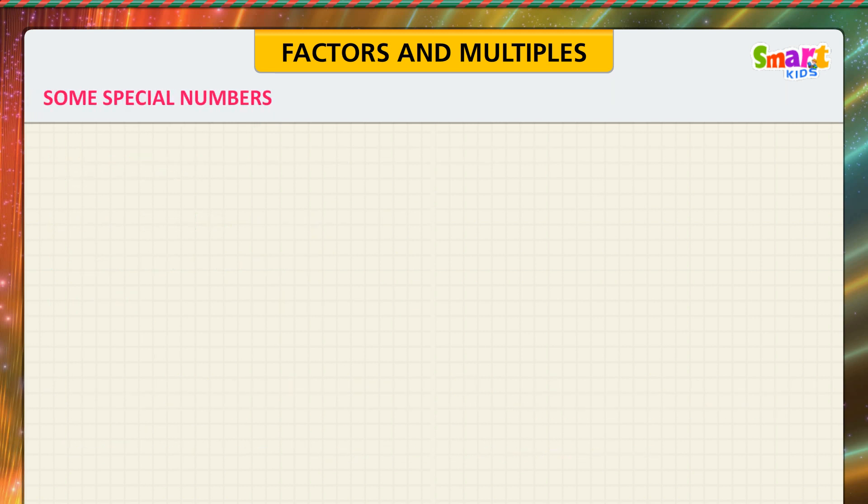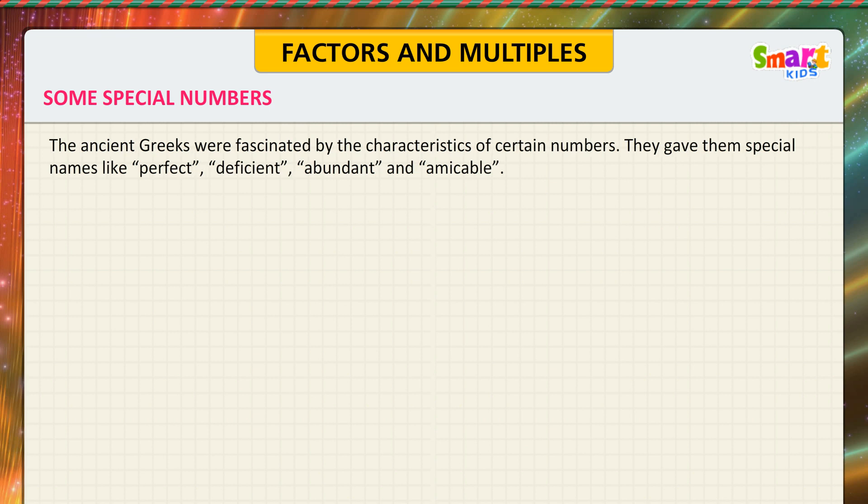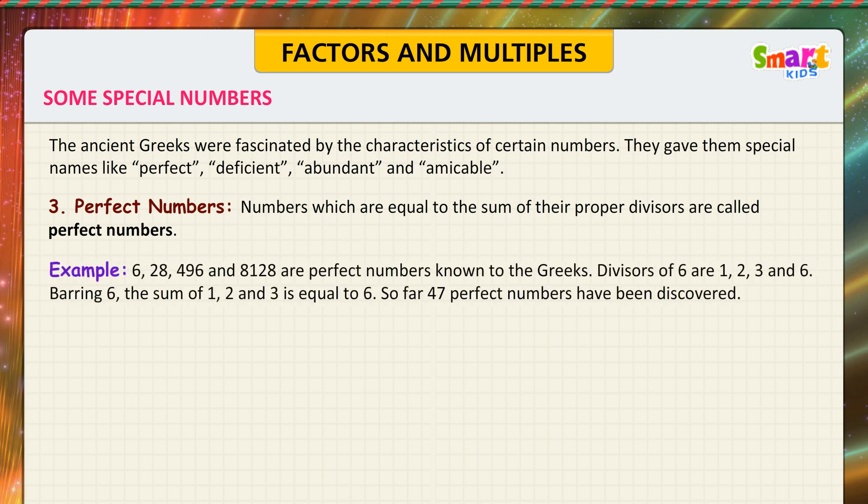Some special numbers. Let us know some special numbers. The ancient Greeks were fascinated by the characteristics of certain numbers. They gave them special names like perfect, deficient, abundant, and amicable. Perfect Numbers: Numbers which are equal to the sum of their proper divisors are called perfect numbers. See the example.